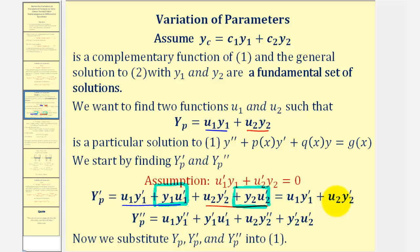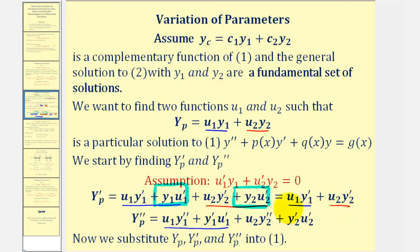This simplification makes it easier to find our second derivative. The derivative of the first term requires the product rule, giving us the sum of two terms, and the derivative of the second term gives us two more terms. So now we have y, y prime, and y double prime, and we'll perform substitution into equation one.